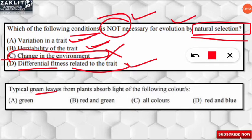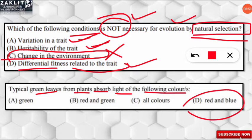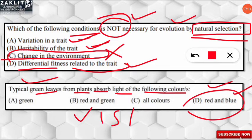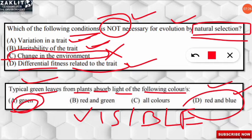The next question asks which colors are absorbed by typical green leaves. The correct answer is option D — green leaves absorb red and blue light. More precisely, the chlorophyll contained in the leaves absorbs red light (longer wavelength) and blue light (shorter wavelength) from the visible light spectrum. They reflect the green light, which is why the leaves of all plants typically look green.